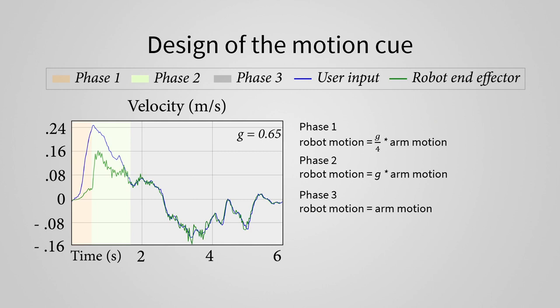The robot motion in the different phases is determined by the equations on the right. This factor G, which we call the gain factor, allows us to generate cues for a range of weights. A gain of 1 means regular teleoperation, and lower the gain, larger the weight.